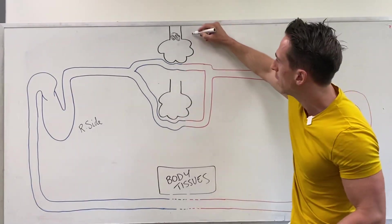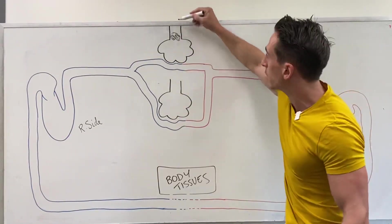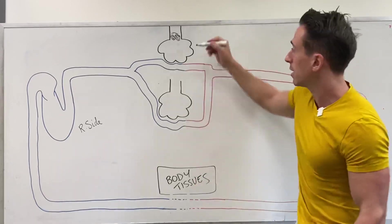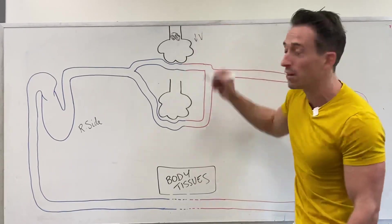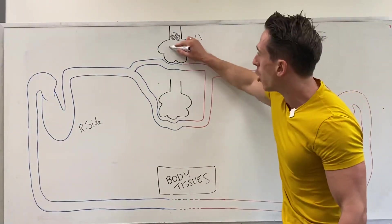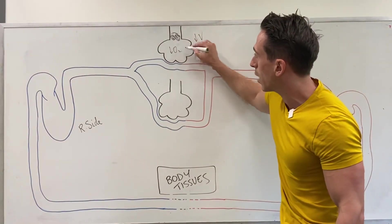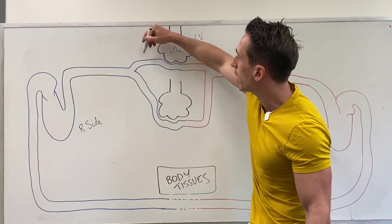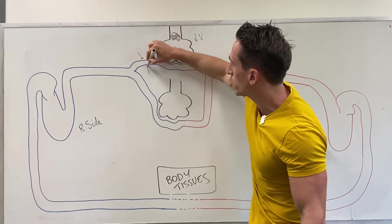When these airways are blocked, it means that the ventilation, the gas going in and out, is minimized, it's diminished, so you get a drop in ventilation. Because there's a drop in ventilation, there's going to be a drop in oxygen in these alveoli, and the drop in oxygen results in pulmonary arterial vasoconstriction.